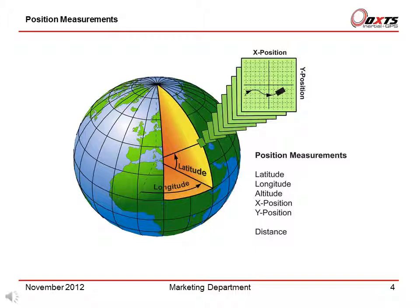Because the earth is curved, it is not possible to have a measurement in meters that covers the whole earth's surface, so the RT must take a small section of the earth and assume it is flat. To use the local grid, the latitude and longitude of the origin position — where x equals 0 and y equals 0 — needs to be entered into the RT configuration software. Then the x and y position measurements are output.